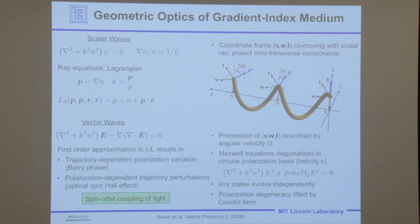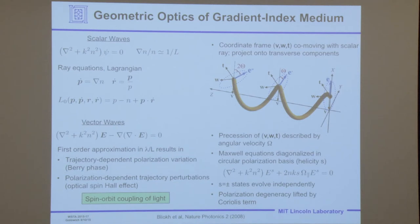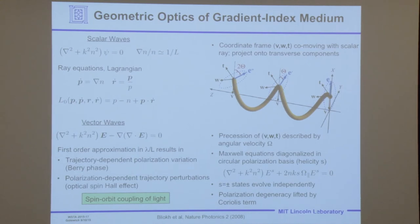Moving on to gradient-index media: for scalar waves, you can write down a Lagrangian for the ray paths including the vector terms, and moving to first-order approximation in λ/L — where L is the characteristic length scale of the gradient of the index inhomogeneities — we can see there's a Berry phase, which is this trajectory-dependent polarization variation, and the optical spin-Hall effect, which is a polarization-dependent trajectory perturbation. We can see this by attaching a coordinate frame to the first-order geometric-optics beam and looking at Maxwell's equations in this rotating coordinate system. Because it's not inertial, you pick up a Coriolis term, and it's diagonalized in the basis of circular polarizations.